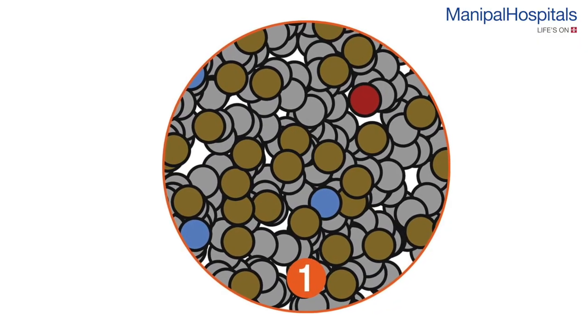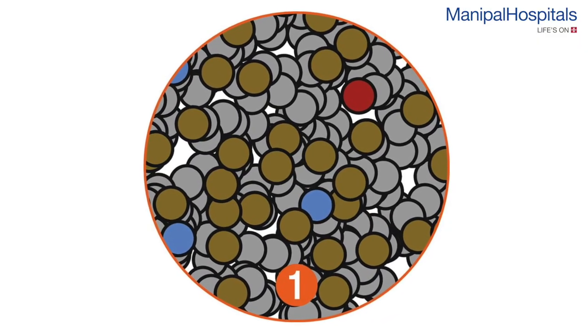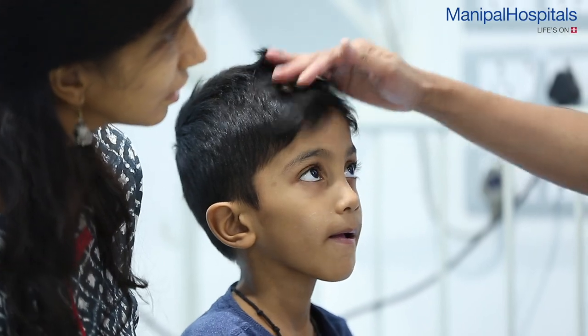If it happens suddenly for the first time, it is called acute pancreatitis. Because of some unfortunate reasons it can repeat, and if it is happening again and again, it is called acute recurrent pancreatitis. If these problems cause any permanent damage in the pancreas — like formation of stones or dilatation of the ductal system — then we label it as chronic pancreatitis. These are the different types of pancreatitis we see in children.